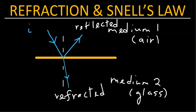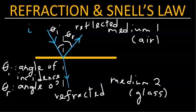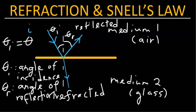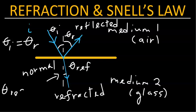There are three crucial angles that we need to understand. The first angle, let's call it theta i, is known as the angle of incidence. Then there is a second angle, theta r, known as the angle of reflection. The third angle — the angle between this dotted normal line and the refracted ray — let's call it theta ref, is known as the angle of refraction.